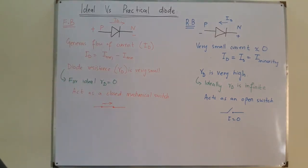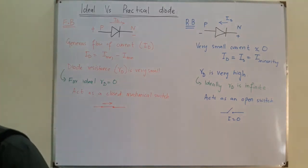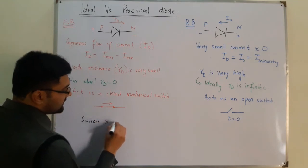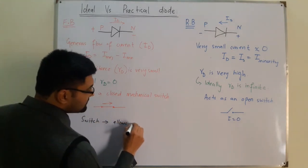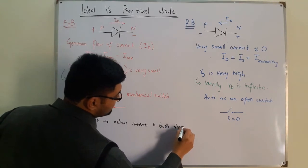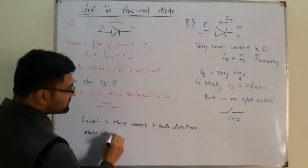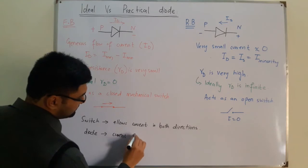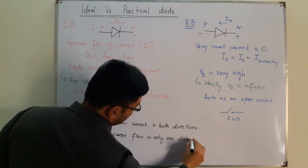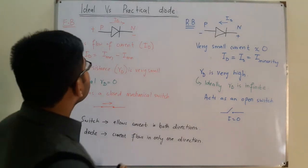What is the difference between a switch and a diode? A switch allows current in both directions through it, whereas a diode is different in that current flows in only one direction through it. That is the difference between a switch and a diode.